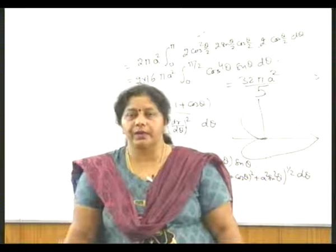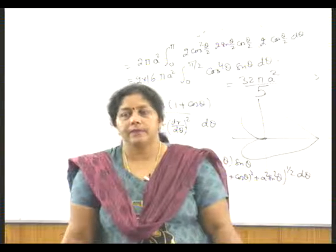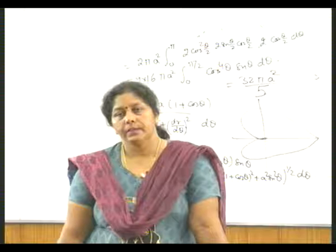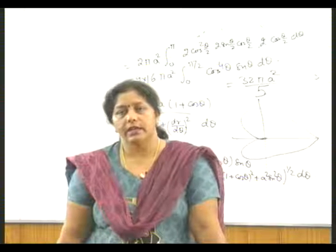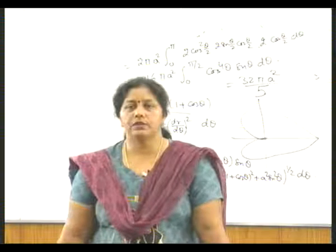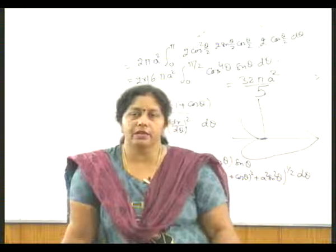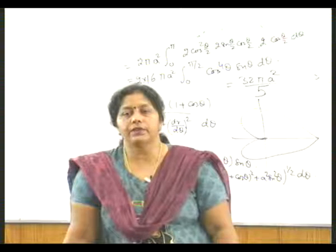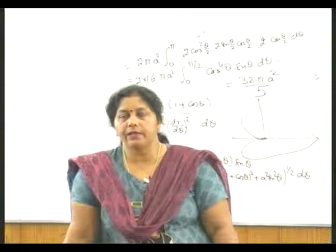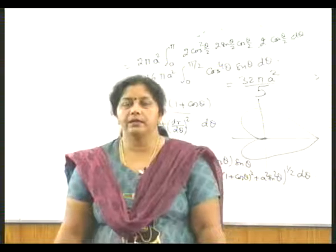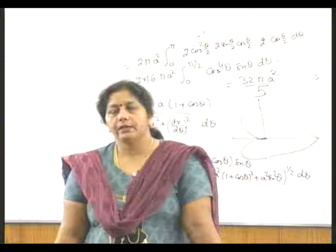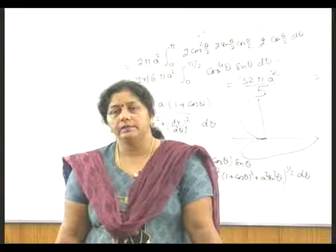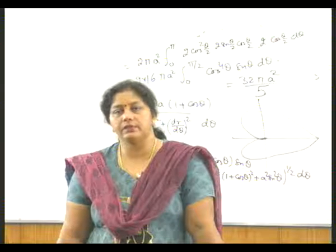If it is a parametric form, the surface area formula is 2πy (with y expressed in terms of the parameter) times the integral of √((dx/dt)² + (dy/dt)²) dt, with limits and y both transformed as functions of t. So the total function is in terms of t and we calculate accordingly. For the polar curve, surface area is 2πy ds = 2πr sinθ into √(r² + (dr/dθ)²) dθ, where r is a function of θ and the limits are in terms of θ.